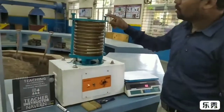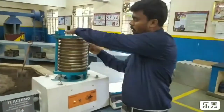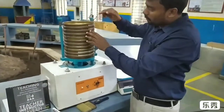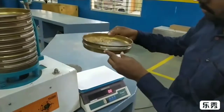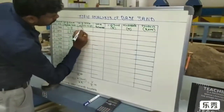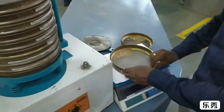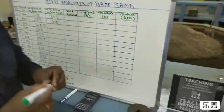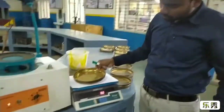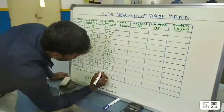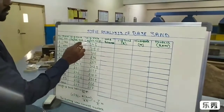Once the machine is off, we take the weight of each sieve after the test. Remove the clamp. We can now see the different grains of sand separated in the sieves. Take the weight of each sieve individually. The first sieve is 345 grams, the second is 315 grams. The pan weight remains 267 grams.